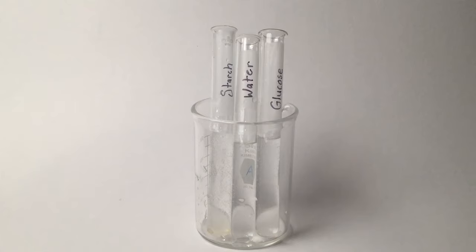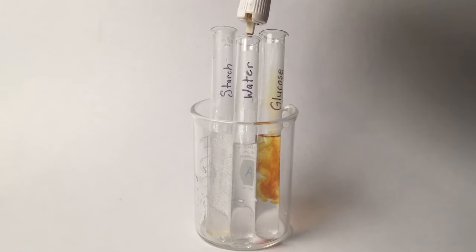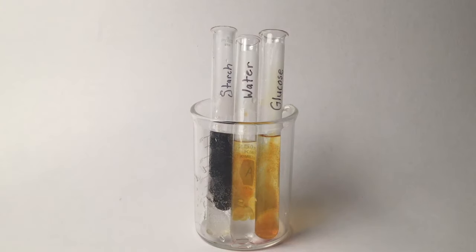My next test is for starch and I will use iodine for that. In the glucose solution with iodine, I get an amber color. With water, I get an amber color which both indicates a negative test but starch turns a black, purplish, bluish color, leading to a positive test.